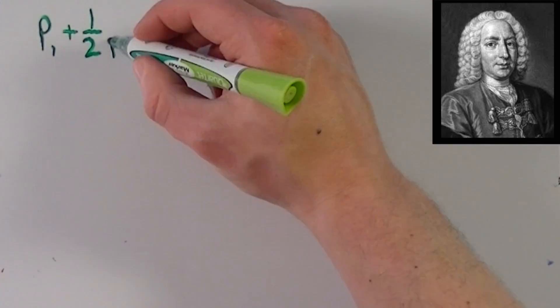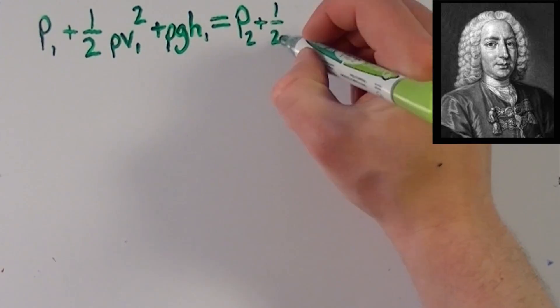First, let's look at the case for Bernoulli. Bernoulli's principle states that the faster a fluid flows, the lower its static pressure becomes.